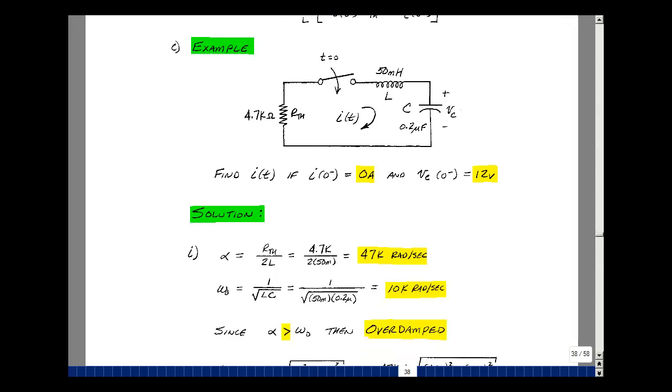With this value of 4.7K, our value of alpha is R Thevenin over 2L, which turns out to be 47,000 radians per second. Omega-0 we calculated with the 50 millihenries and 0.2 microfarads was 10 kiloradians per second. Here we have alpha greater than omega-0. These are the conditions for being overdamped.